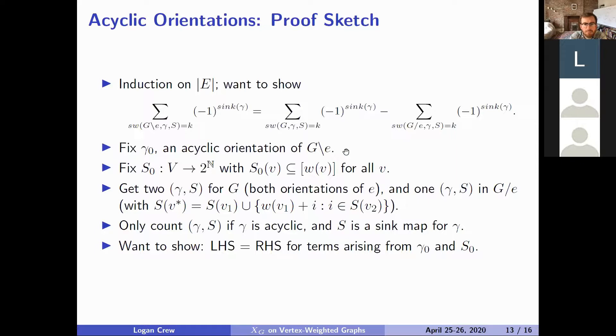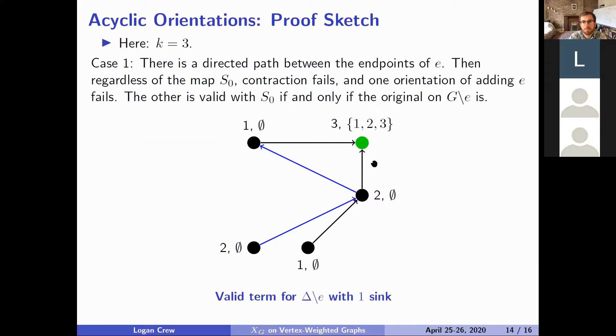So to show this we would fix an acyclic orientation of g delete e and we would fix a sink map of g delete e. And then we would show that this holds by considering that fixed acyclic orientation and s on g delete e we take the two on g that correspond to it because we have to add in the extra edge again and assign it one way or the other and then we have the one on g contract e which we want to check if it remains acyclic and we want to check in all of these cases if s remains a valid sink map and if it does we count minus one to the number of sinks.